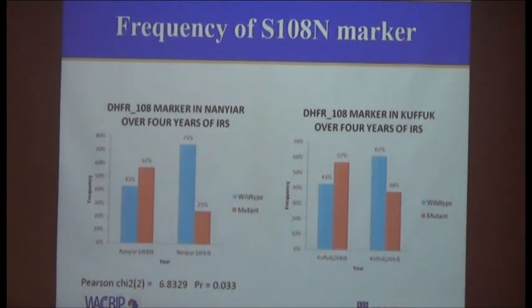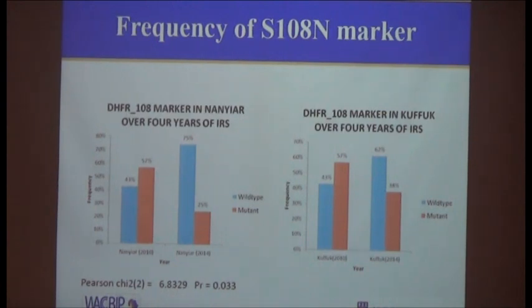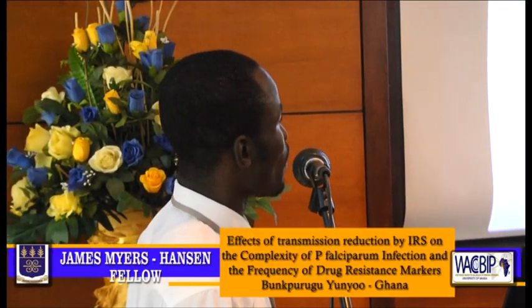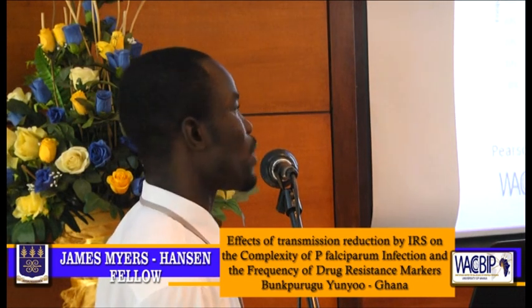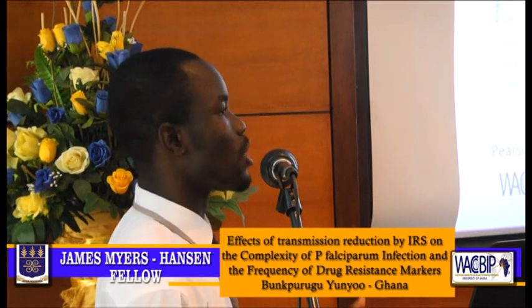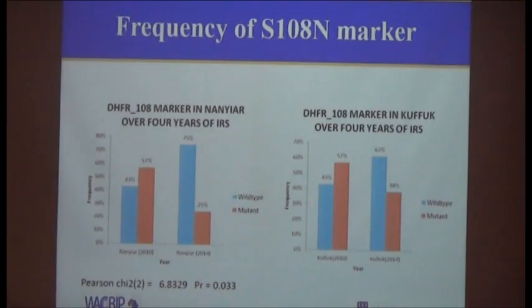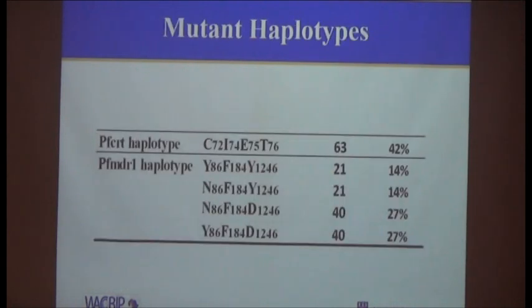This also tends to agree with the second school of thought, which says that as transmission reduces, we expect to see a reduction in the frequency of drug resistance markers. The results show that fewer people are getting sick, and therefore there's less selective pressure on the parasite types, so the sensitive parasites have the chance to thrive over the resistant ones — that's why we're seeing a drop in drug resistance marker frequency.